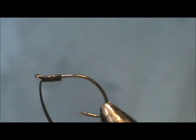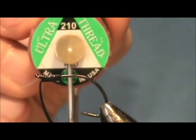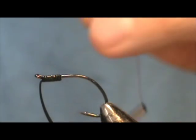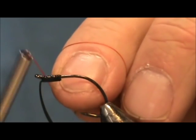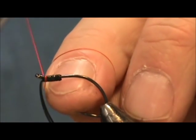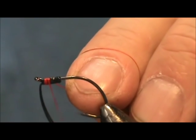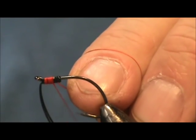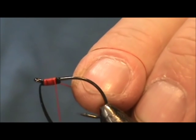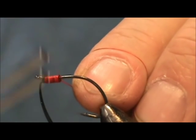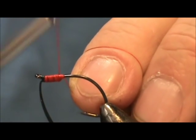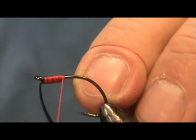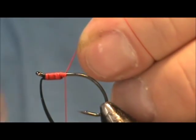The thread I'm going to use is red and this is 210 denier UTC. I'm going to start the thread in back of the hook, right behind the weed guard tie-in and get a little red color. You can use black thread or whatever color you want. There's a lot of different colored grasshoppers on the market.